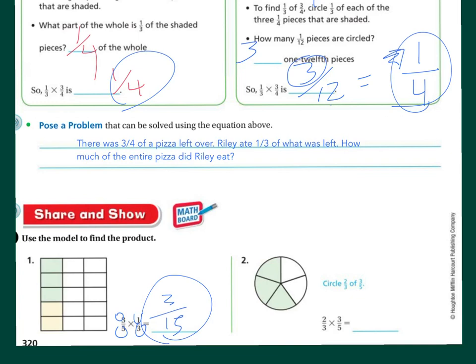Over here, we have two-thirds times three-fifths. So, again, two times three is six. Three times five is fifteen. So, the answer is six-fifteenths.